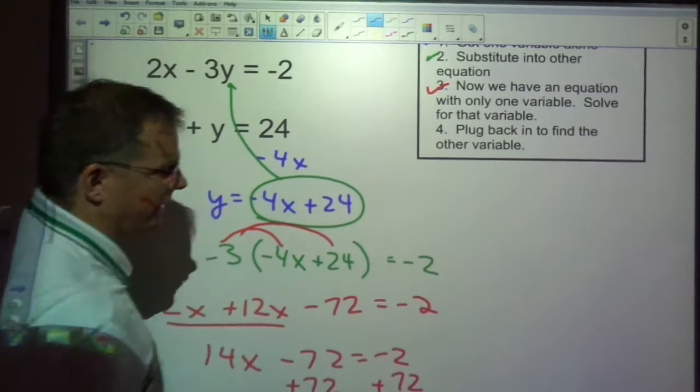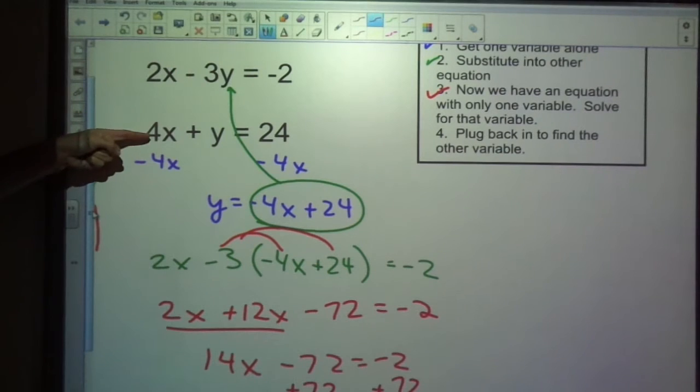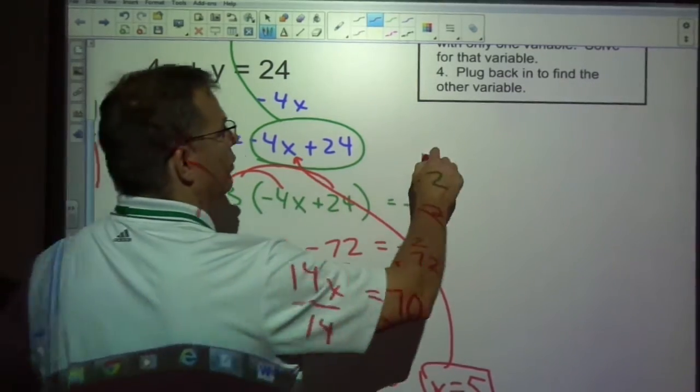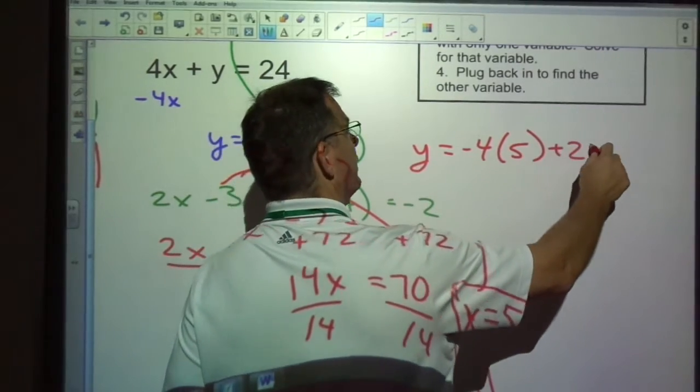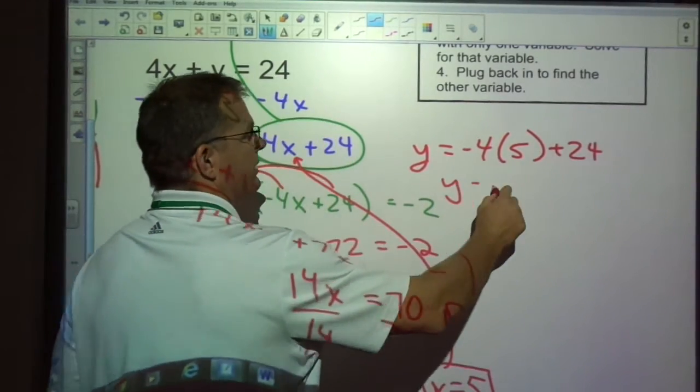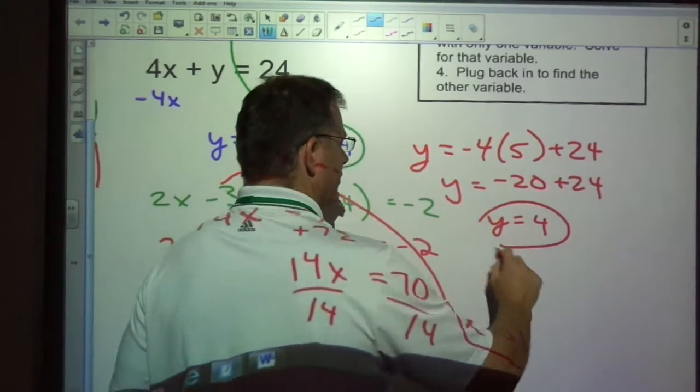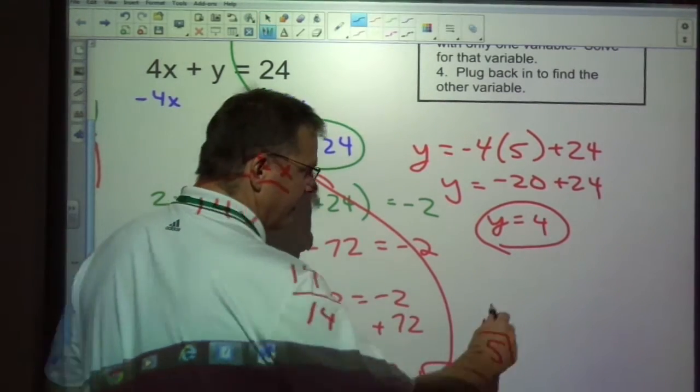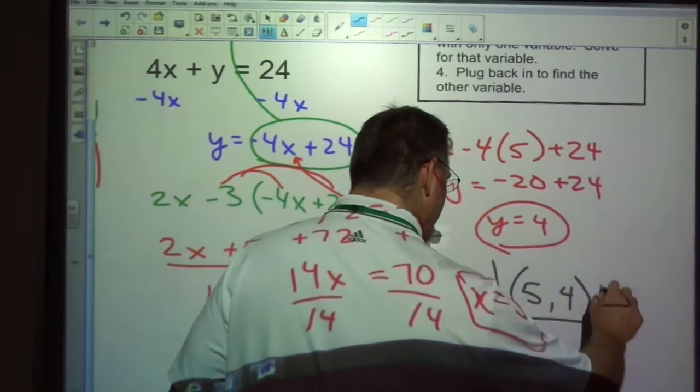Now plug back in to find the other variable. So I know x is 5, but I can plug it back in anywhere. I could go into here or here or even here. And this is what I'm going to do. I'm going to plug back into here and say x is 5. So y equals negative 4 times 5 plus 24. So that would be negative 20, which makes 4. So x is 5, y is 4. I write my answer as an ordered pair every time like this. 5 is x, 4 is y. That is my answer.